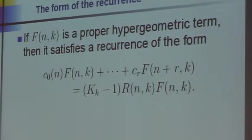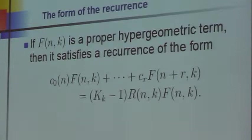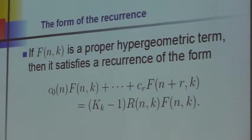Now the general theorem, still with functions of one variable—that is, one summation variable—is that a proper hypergeometric term always satisfies a recurrence that looks like this. This is the summand recurrence in general; it looks like that.